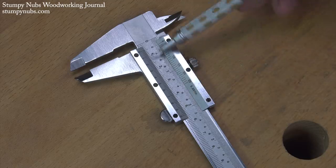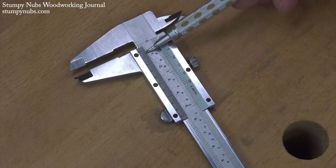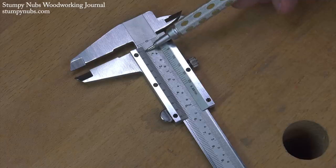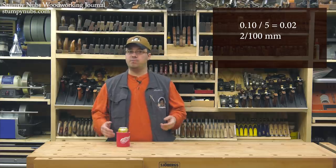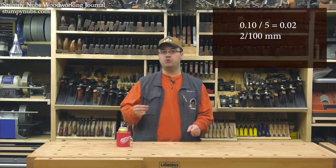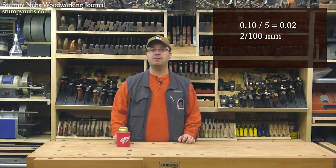Now each of those are divided into five finer increments. To determine the decimal equivalent for those marks, I have to divide my point one by five. So I add a zero and now I can easily divide point one oh down to point oh two. Therefore, each of the fine marks on my Vernier scale represent two hundredths of a millimeter. Now that I understand my scale, let's take a measurement.